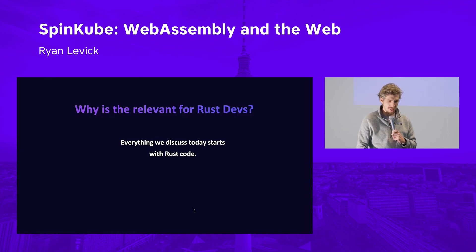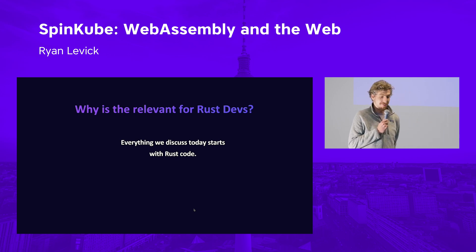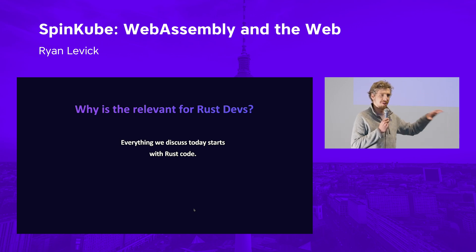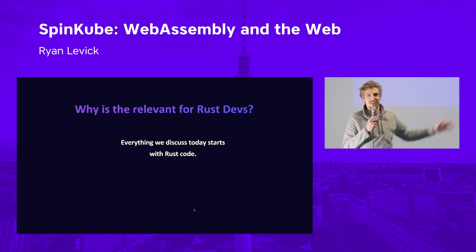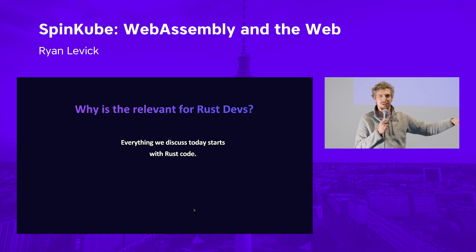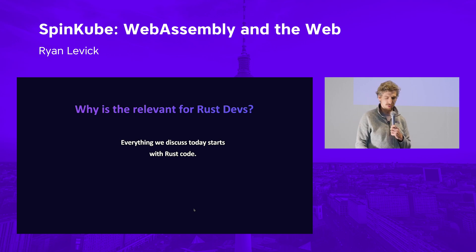Why is WebAssembly relevant? If you don't care about Kubernetes at all, why should you listen to this talk? Well, everything we talk about today starts with Rust code. We're going to be talking about running Rust code in the cloud — whatever you want to call the cloud. That might be a server, a Raspberry Pi, or even your refrigerator. This is just about running Rust code somewhere.